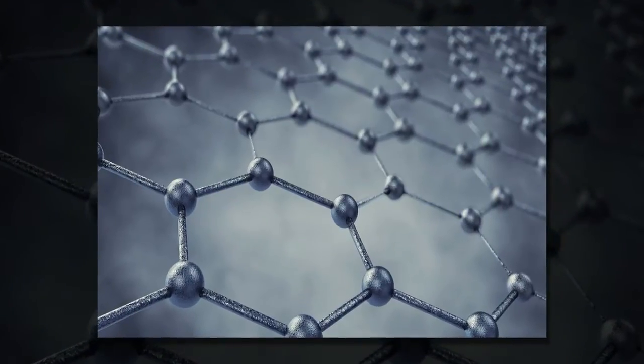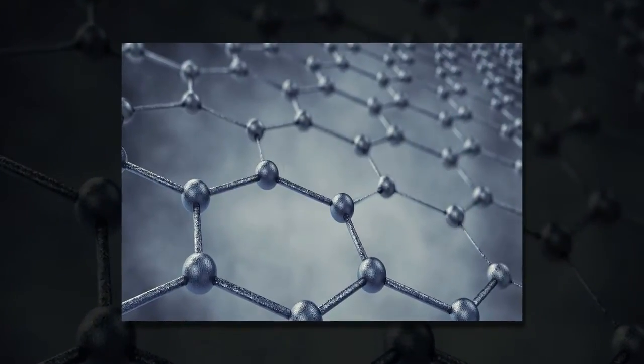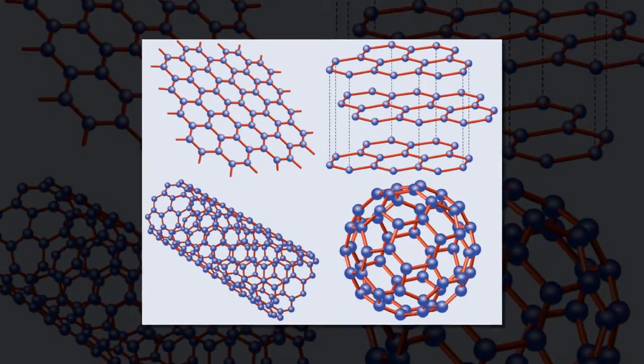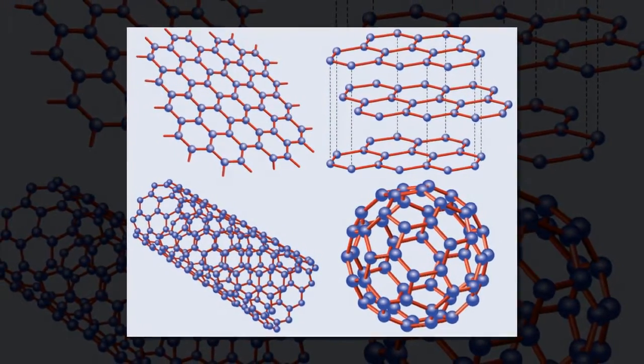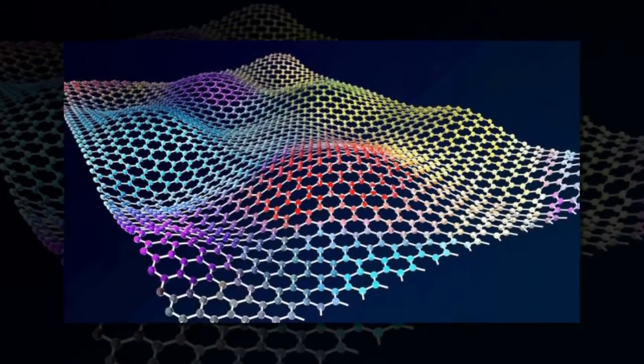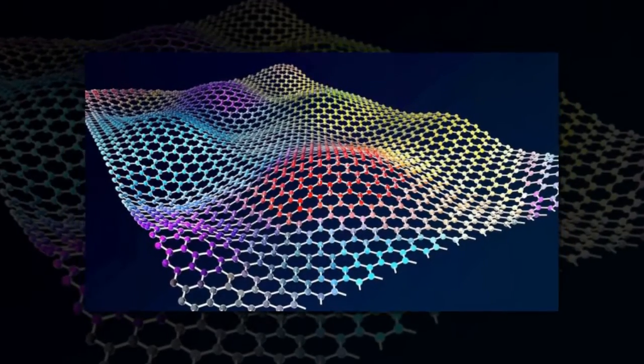Since its discovery, graphene has captured the attention of scientists and engineers for its many extraordinary properties, but graphene oxide, an oxidized derivative of graphene, has largely been viewed as graphene's inferior cousin.